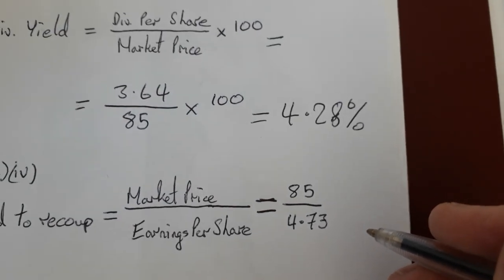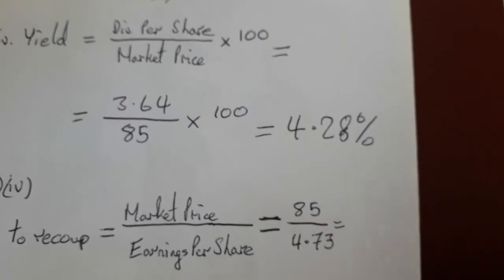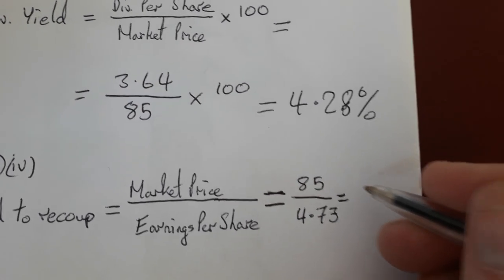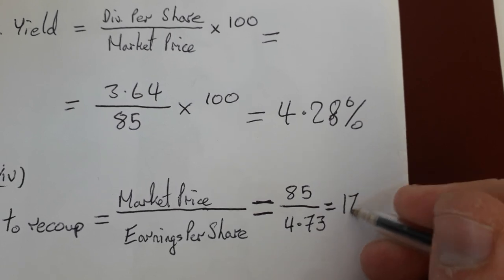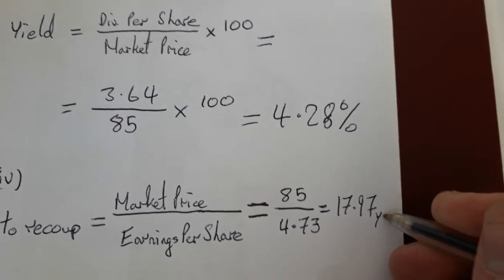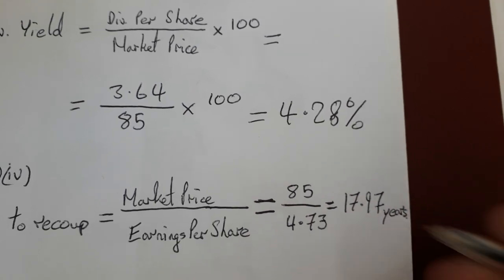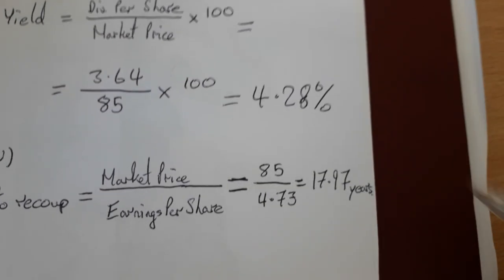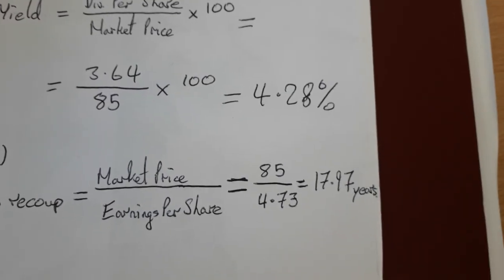If we just divide one by the other, there will be a little rounding off to be done, and we'll round it to two decimal places. That gives us 17.97, and the unit is years. Sometimes we use a ratio unit as well, but I prefer to use years for this one.